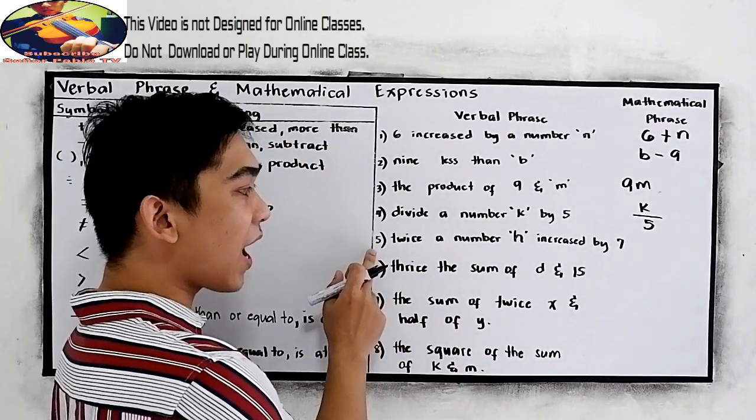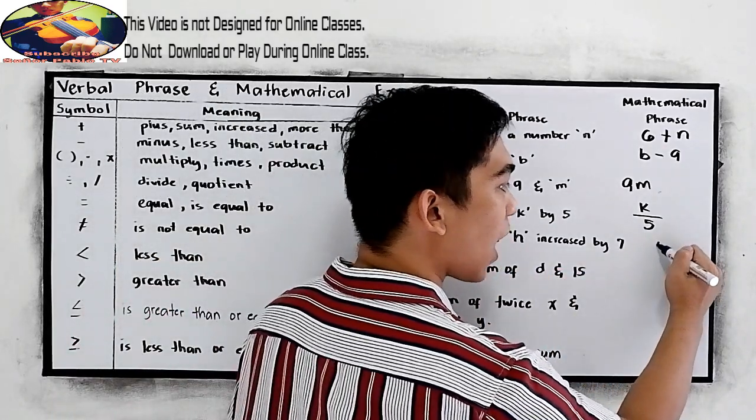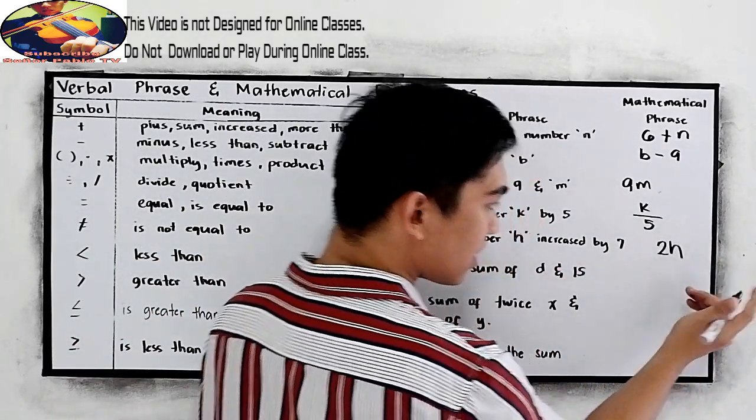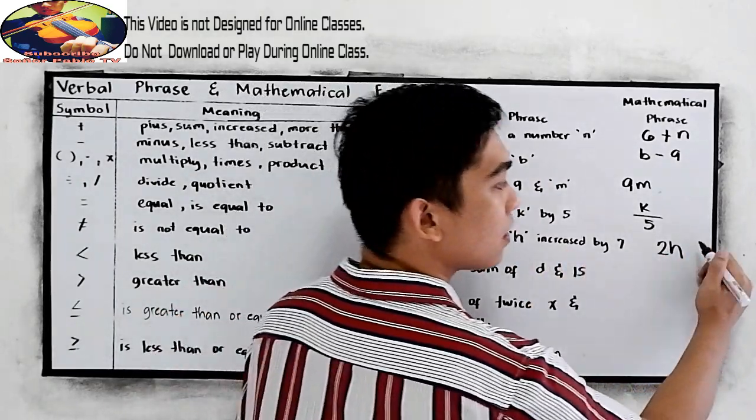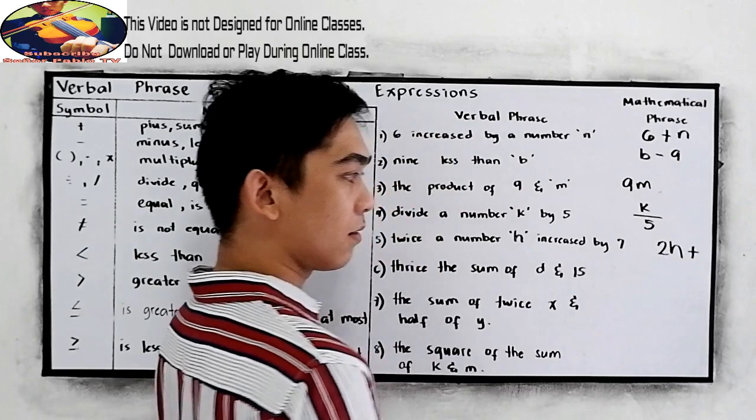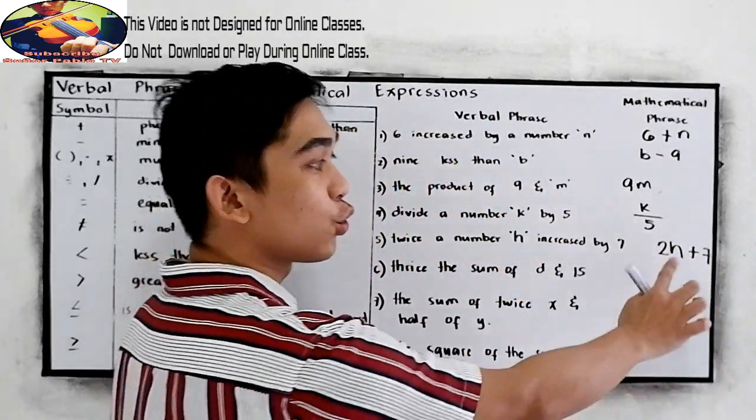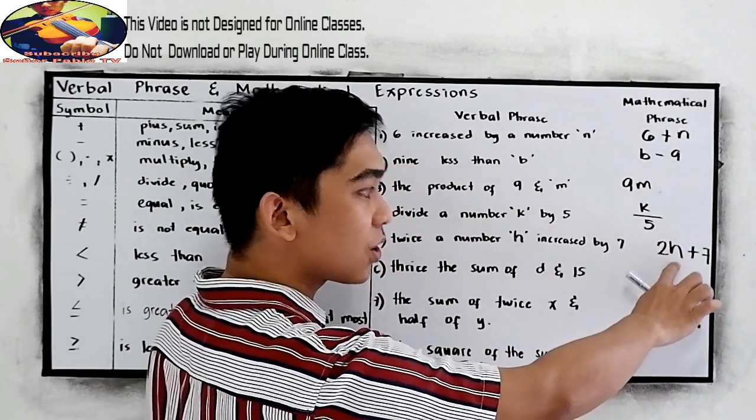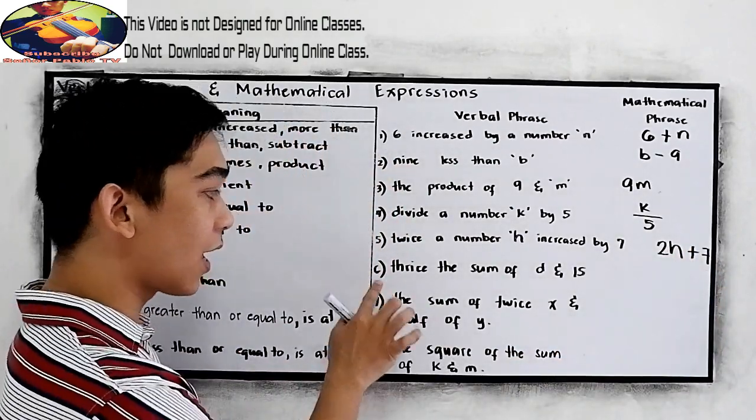Number five. Twice a number h increased by seven. Twice a number h increase, increased by seven.